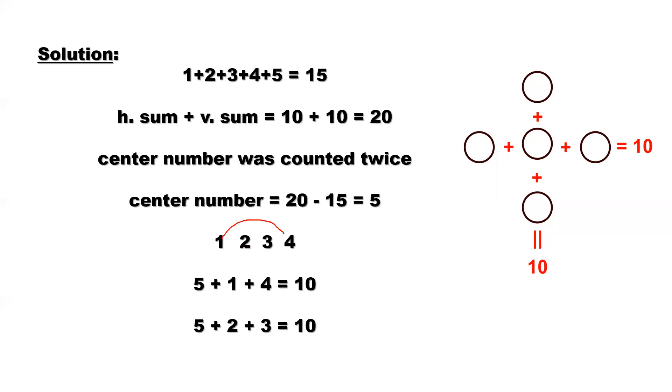1 and 4, 2 and 3. So 1 and 4 here, because 5 is already fixed, and 2 and 3. So this is a solution. This is another solution. If we don't consider the order, you have to put 5 in the center. So 5 should be here.